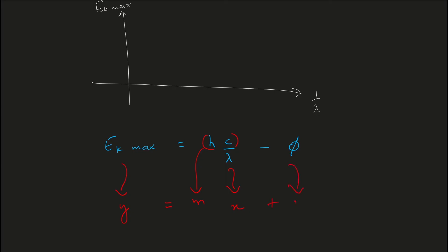The y-intercept is again −φ (negative work function). The graph has the same shape as before. An important point: the gradient here equals hc — the product of Planck's constant and the speed of light. The x-intercept gives the value of 1/λ at the threshold wavelength, meaning the wavelength of the photon at which electrons are just released with bare minimum energy and zero kinetic energy.